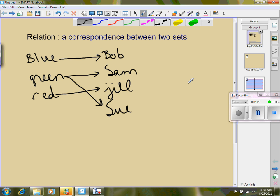It's also called a mapping from one thing to the other. So the way I drew my arrows, the colors will be my input and the names will be the output. That's what a relation is. Just matching stuff up.